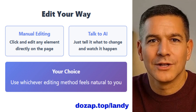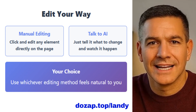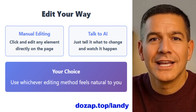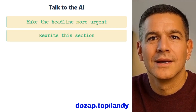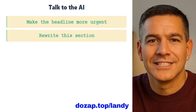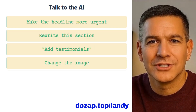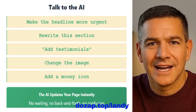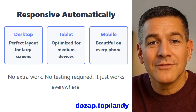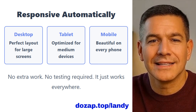And you can edit everything manually, or just talk to the AI and tell it what to change: make the headline more urgent, rewrite this section, add testimonials, change the image, add a money icon. The AI updates your page instantly. Everything is responsive automatically — desktop, tablet, mobile.